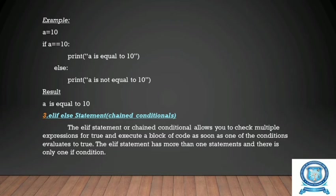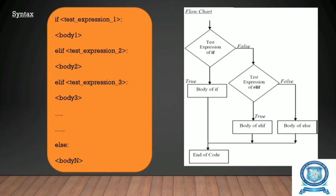Here we have initialized a as 10, so we will get the result 'a is equal to 10'. Suppose if a is initialized as 2, then if a is equal to 10 is checked and the result is false — so the if statement will not be printed and the else statement will be printed, giving us 'a is not equal to 10'.